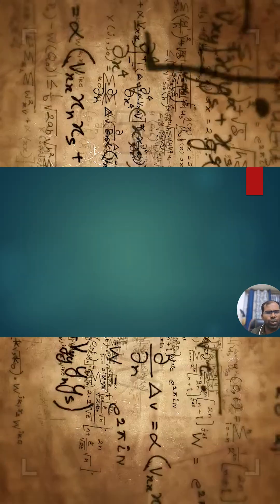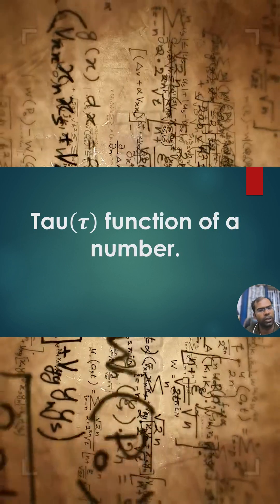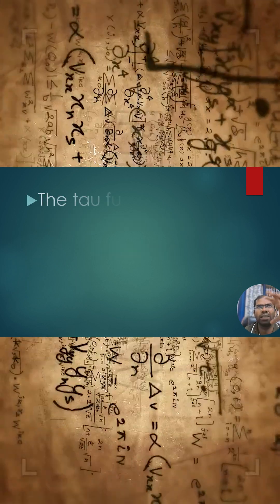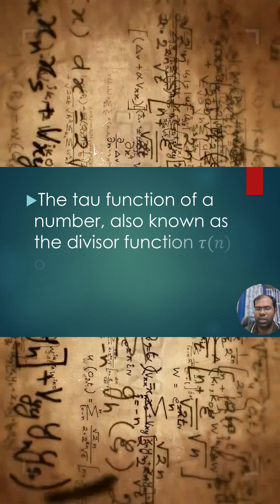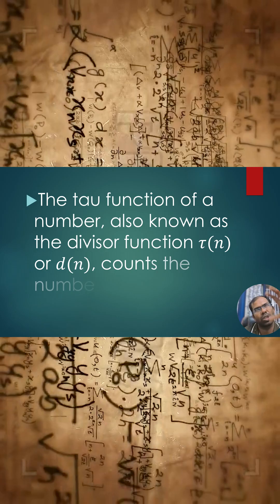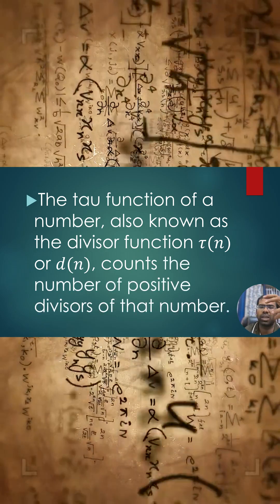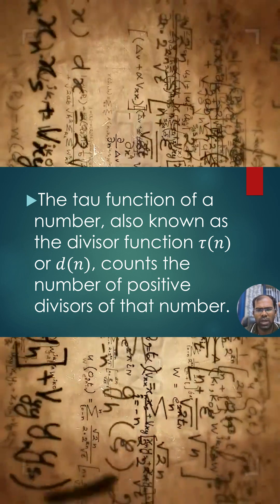You should know about the tau function. The tau function of a number is also called the divisor function. It is known as the τ or d function, which counts the actual number of divisors that a number can have.